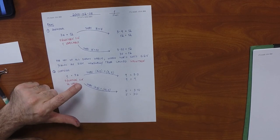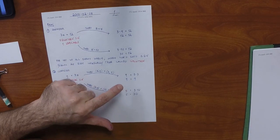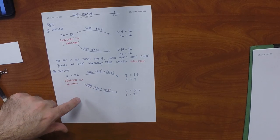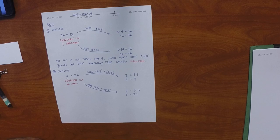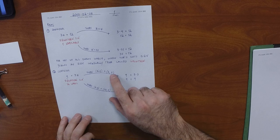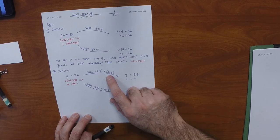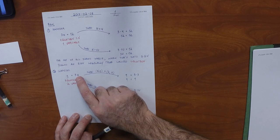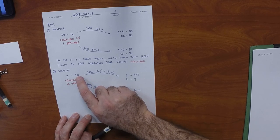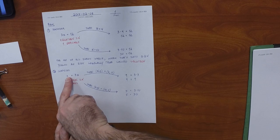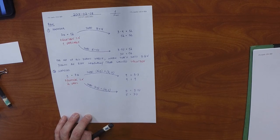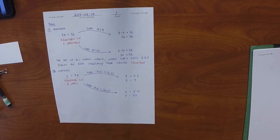Some points we plug in result in an equation which is logically true; other points result in one which is logically false. Could someone tell us a different point that yields a logically true equation? (4, 12): the product of 3 and 4 is 12. How about (0, 0)? That one works too. There's a multitude of things we could plug in.